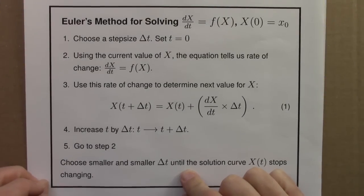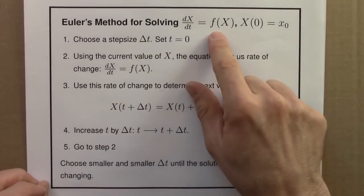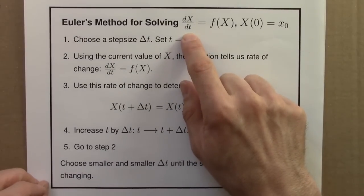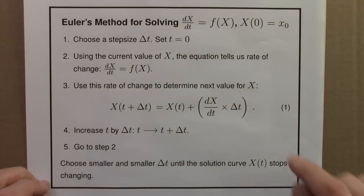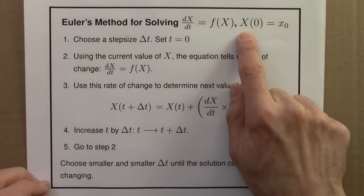Here's an overview of Euler's method for solving differential equations of this form. The derivative of some unknown function x is just a function of x. And we assume that we know the starting value of this function x.